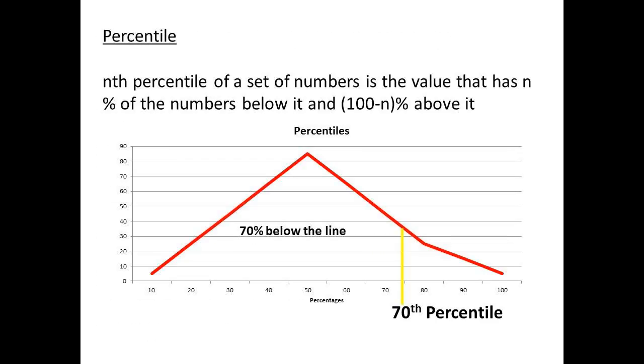A useful way of referring to dispersion of data is by percentile. Percentiles divide the data by percentage, so that the nth percentile is the value that has n percent of the numbers below it, and 100 minus n percent above it. The 70th percentile would have 70 percent below the line.